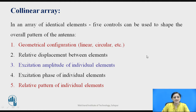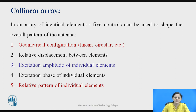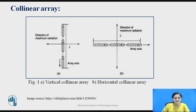In an array of identical elements, five control points are considered to obtain the overall pattern of the antenna. The first control point is the geometrical configuration of the antenna, in case of linear or circular polarization. Relative displacement between two elements is considered, as well as the excitation amplitude and phase of each individual antenna. The relative pattern of an individual element is also considered as a control point to decide the pattern of an antenna.